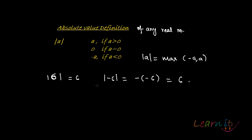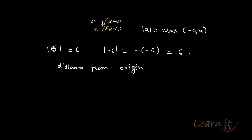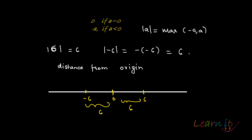Absolute value gives you a positive result. In terms of distance, it is very important to know what absolute value actually represents. Absolute value is essentially the distance from the origin. That is why it is always positive. If we have 0 here, 6 here, and minus 6 here on the number line, this distance is 6 and that distance is also 6 — that is essentially the absolute value.